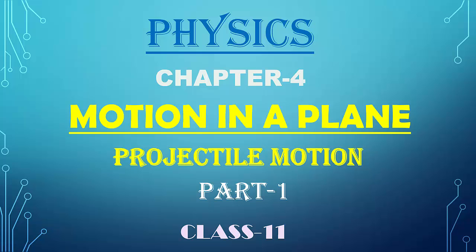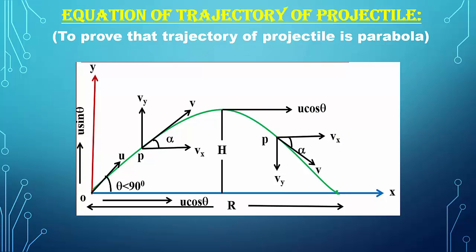Hello everyone, welcome to Physics Online Classes for Class 11 students. Let us continue Chapter 4: Motion in a Plane. Today we are going to study about projectile motion, Part 1. As we studied basic terms in the previous class — angle of projection, velocity of projection, what is a trajectory — now let us study in detail. First, we are going to study the equation of trajectory of a projectile, or in your examination: prove that the trajectory of a projectile is a parabola.